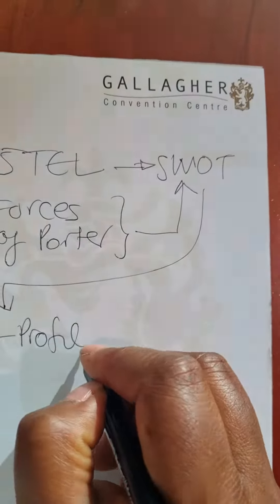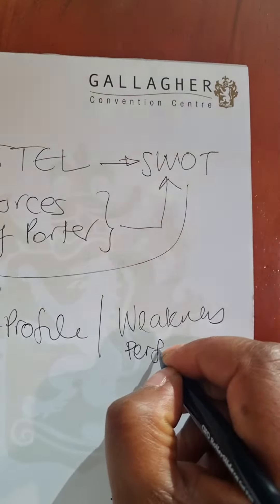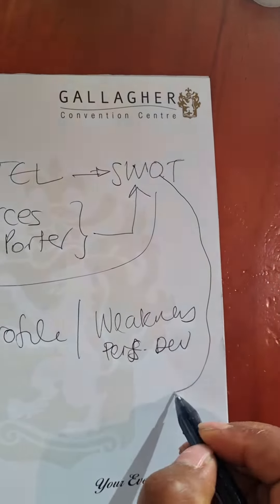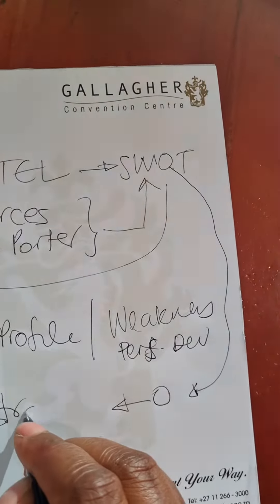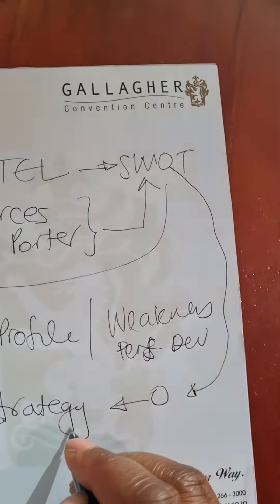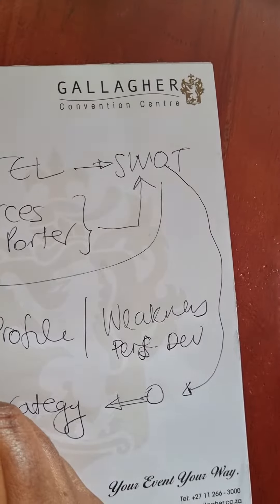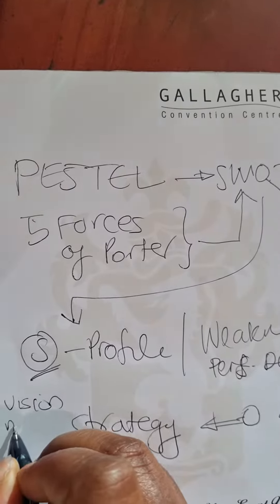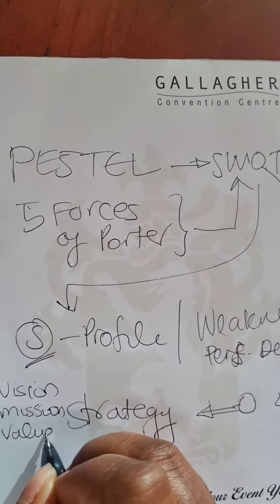You take the SWOT analysis — S, which is your strengths — to your profile, because that's your strength. Then you take weaknesses and work out a personal development plan. Then you take all four opportunities and design a strategy, and before you set up the strategy you focus on the vision, the mission, and the values.